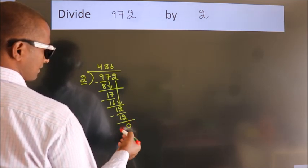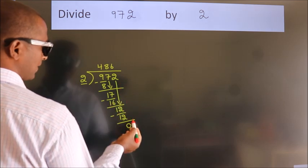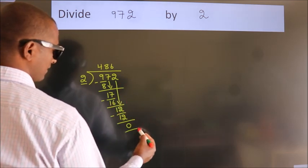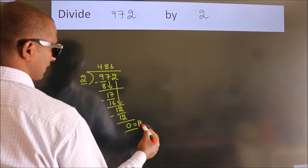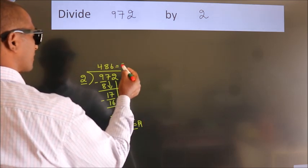After this, no more numbers to bring it down. So we stop here. This is our remainder. This is our quotient.